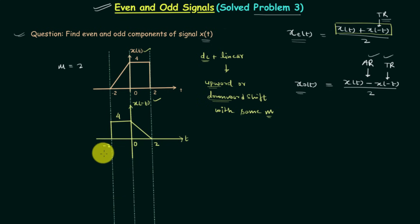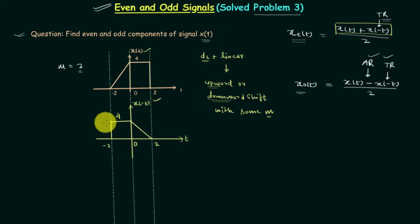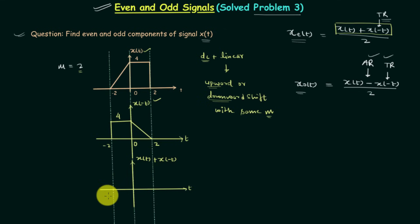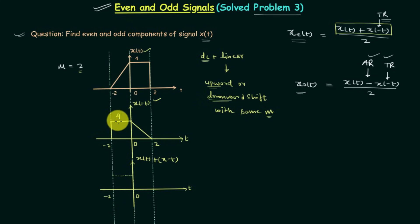From minus 2 to 0, X(t) is linear with slope equal to 2 and X(-t) is constant with value equal to 4 — that is, DC with value 4. So there will be a shift of 4 in the resultant signal and the slope of the signal will remain the same as the slope of X(t). The shift will be upward because 4 is positive.